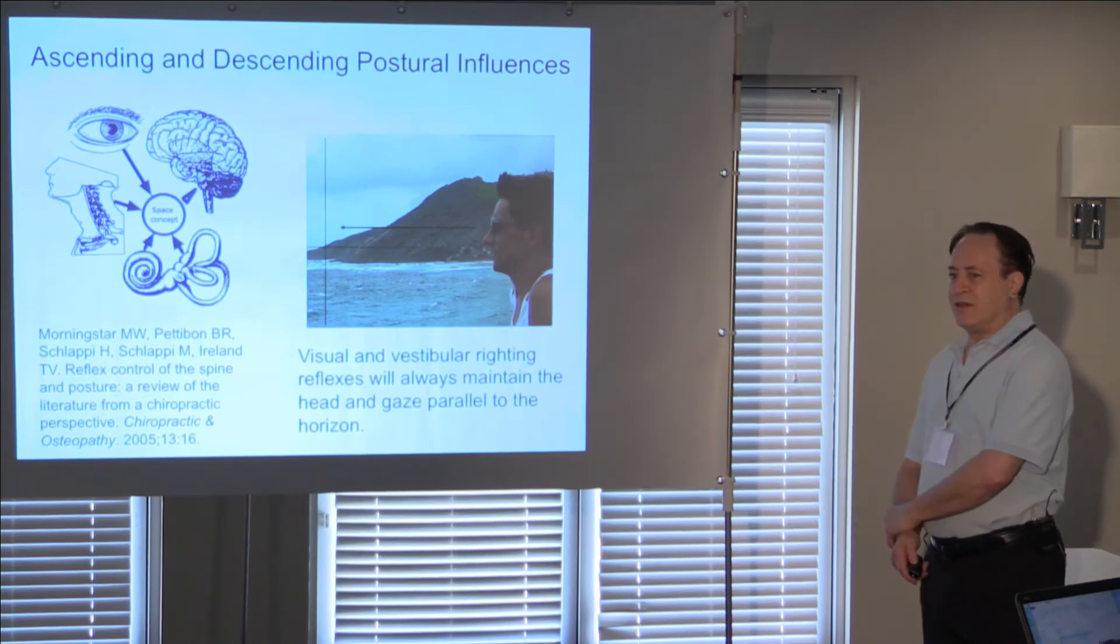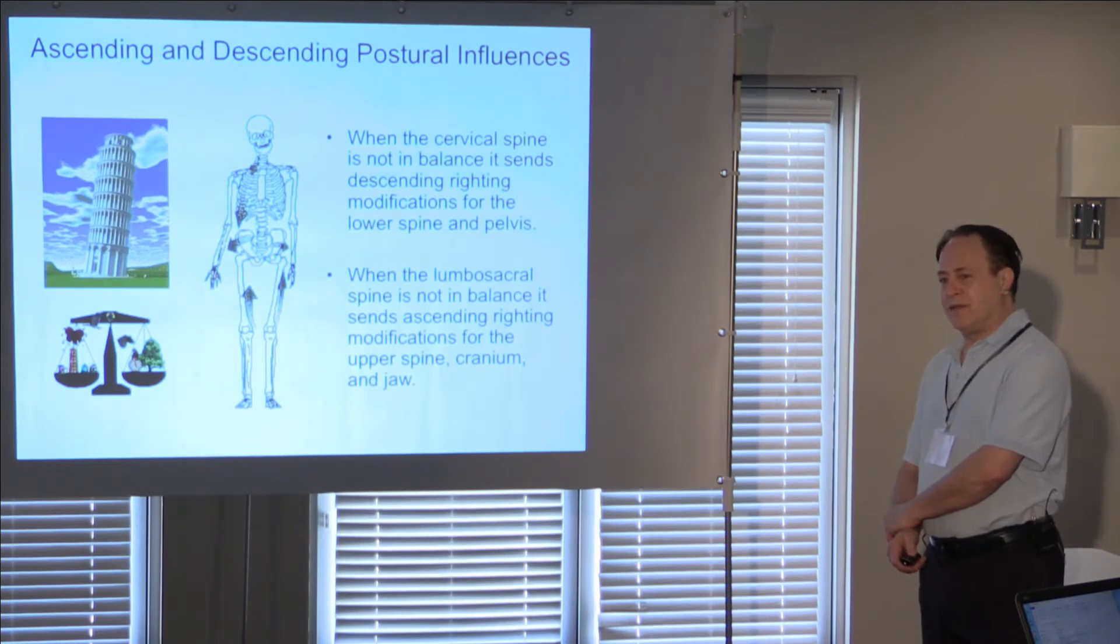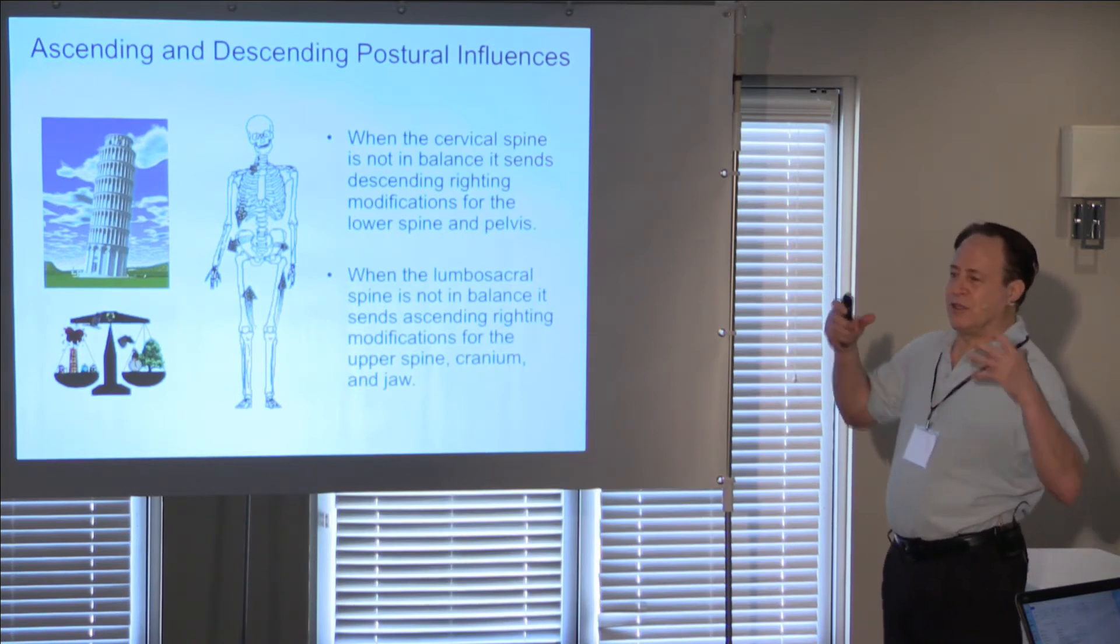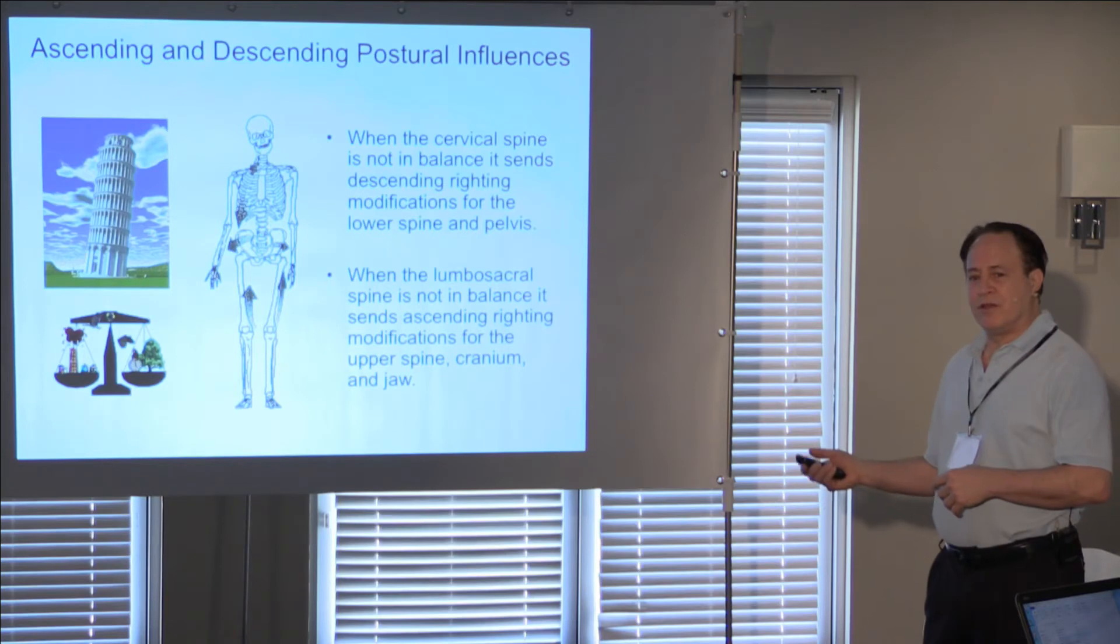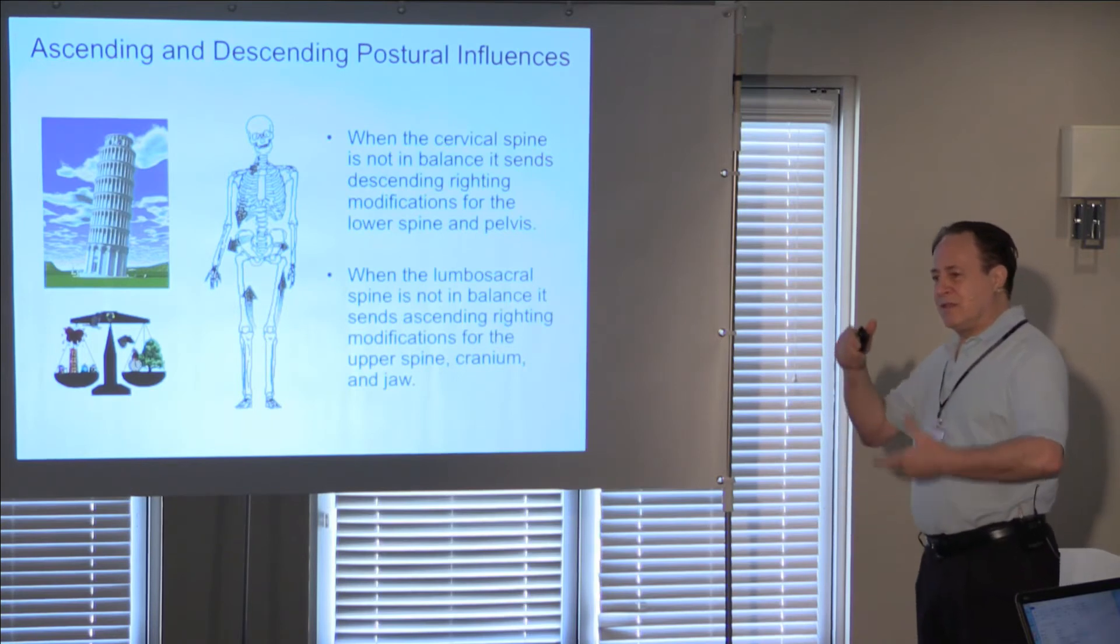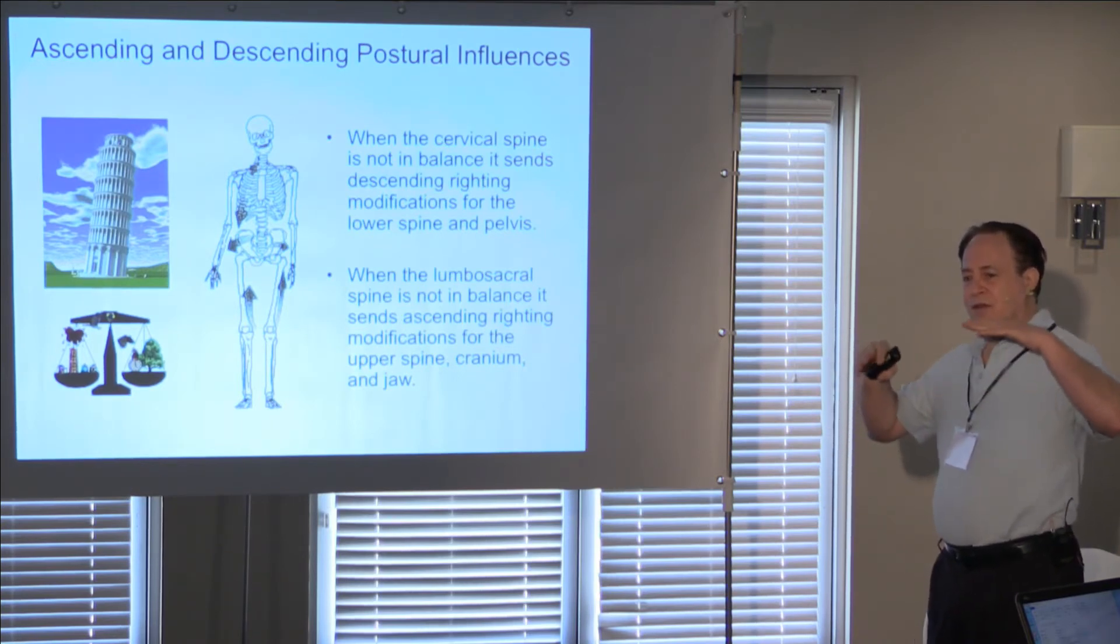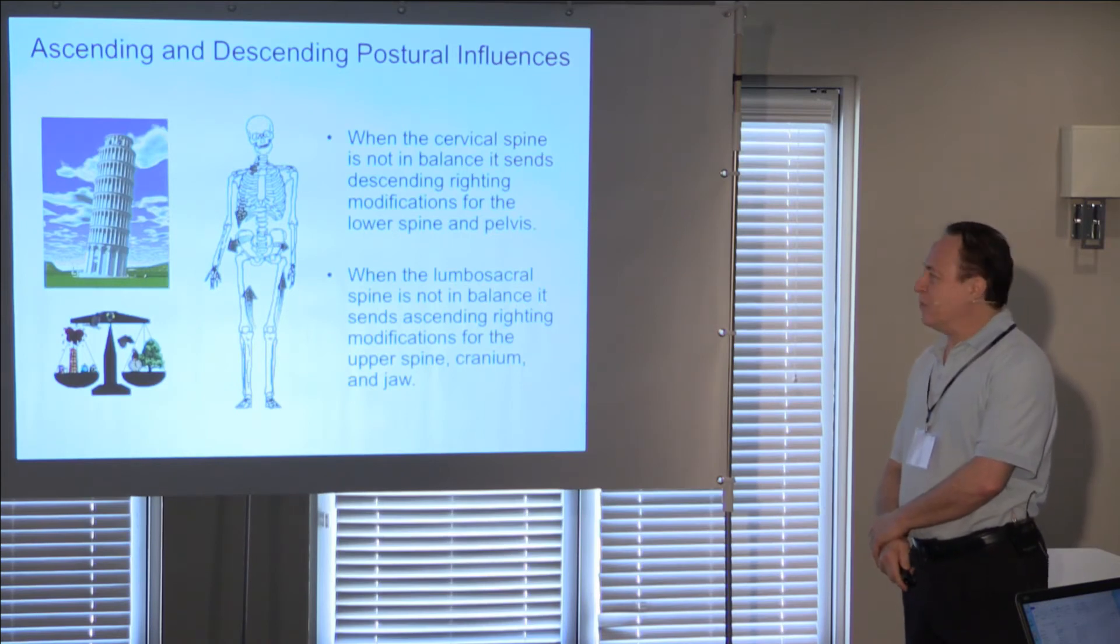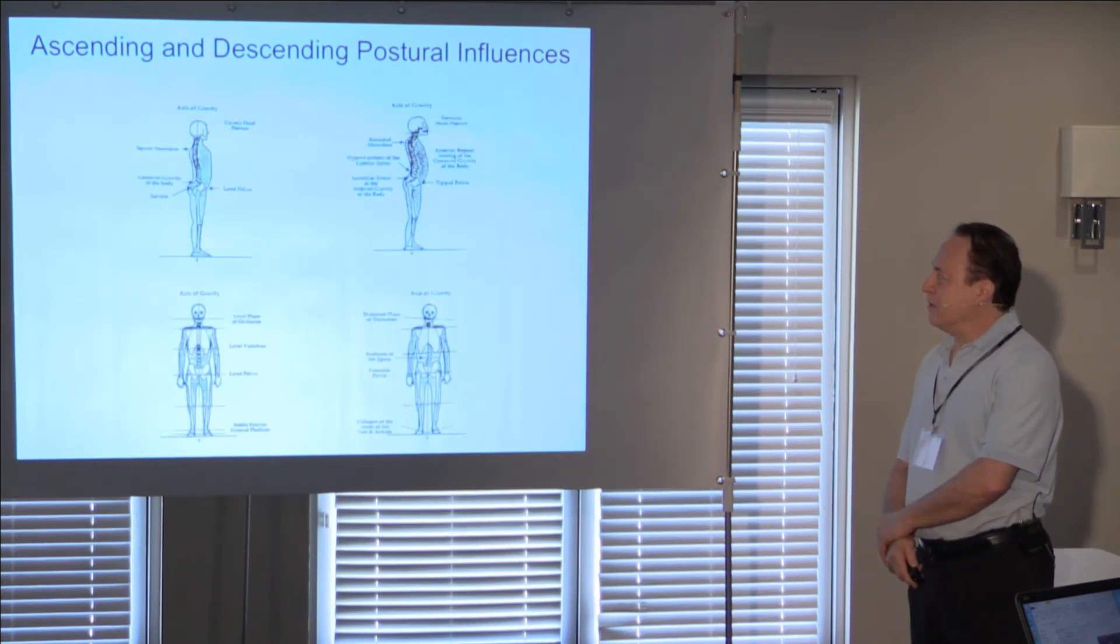And that, essentially, our eyes and ears are wired neurologically to stay level to the horizon through cerebral reflexes. And that when the cervical spine's not in balance, so if there's something going on in the cervical spine, the pelvis will change to keep the eyes and ears level. And if there's something going on in the lumbosacral spine, the cervical spine will modify. But as these things take place, these coupling between the two areas, the occlusion seems to be one of the things that also is affected.